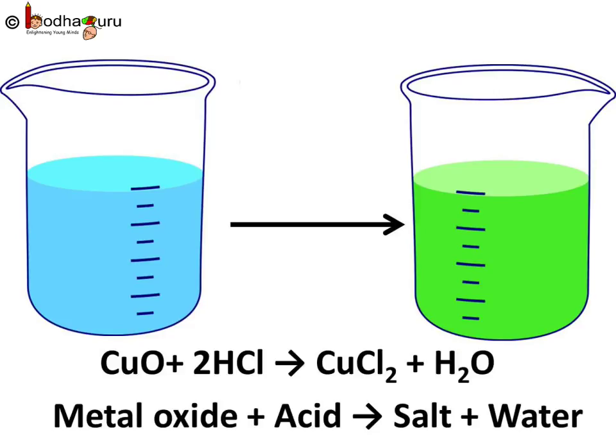What if we add acid to a metal oxide? We take a small amount of copper oxide in a beaker and add dilute hydrochloric acid slowly while stirring. We see the colour of the solution turns blue-green, and this is because of the formation of copper chloride. So an acid produces salt and water in reaction with a metal oxide.